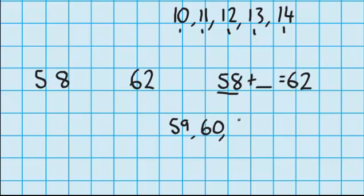So I'll have 59, 60, 61 and 62. So that's 1, 2, 3, 4 numbers. So 58 plus 4 equals 62.